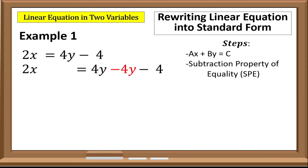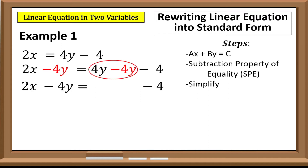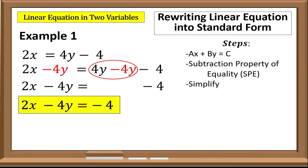Since we are using the SPE, we subtract 4y from both sides of the equation, then simplify. The 4y on the right side is eliminated, so the new equation is 2x minus 4y equals negative 4. Our equation is now in standard form, and we can identify: a is 2, b is negative 4, and c is negative 4.